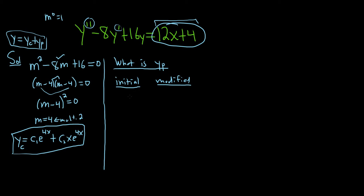The initial guess is based solely off what's here on the right-hand side of the differential equation. We have a linear function, 12x plus 4. So that will be ax plus b. That's our linear form.